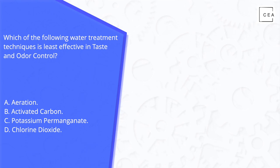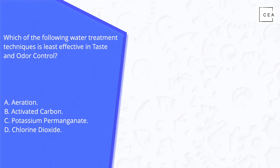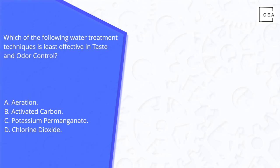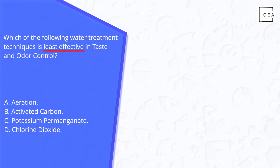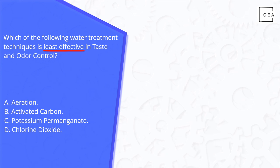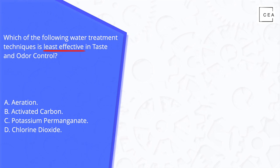This is an example of a concept problem that might be asked on the PE exam. For these concept problems, it's important to identify what is being asked and what resources we use to solve this. I like to refresh myself by rereading the problem statement. In this case, they're asking for the least effective water treatment technique for controlling taste and odor. I underline 'least effective' to keep myself on track as we work through the problem.